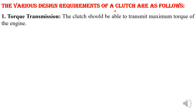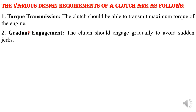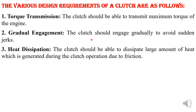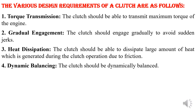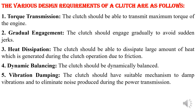Various design requirements for the clutch: first is torque transmission — the main objective is to transmit torque from engine to the wheels through the clutch. Then gradual engagement — the clutch should not give any kind of jerk movement; it should gradually engage between the engine and transmission. Then heat dissipation — whenever the clutch is in operated position, heat is produced due to friction and that heat must be dissipated. It should also provide dynamic balance and vibration should be avoided.